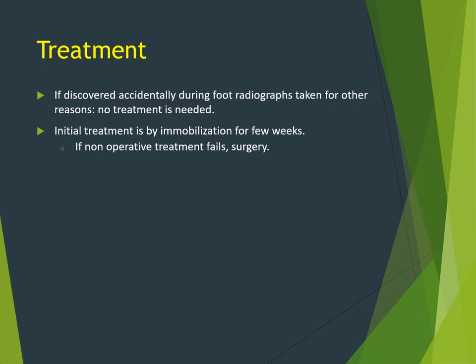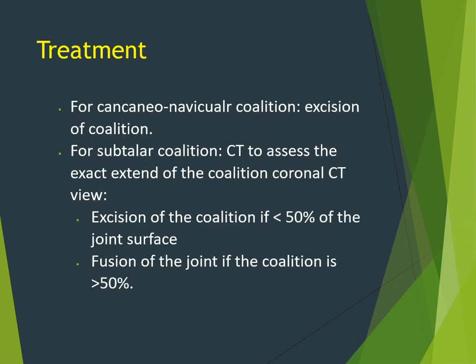Treatment of tarsal coalition: if discovered incidentally, no treatment is needed. For symptomatic cases, initial treatment is immobilization — casting or a CAM boot. If this fails, surgery is indicated. For calcaneonavicular coalition, the treatment is always excision. For subtalar coalition, a CT scan is obtained to assess the extent: if it involves more than 50% of the posterior subtalar joint, the treatment is fusion; if less than 50%, the treatment is excision.